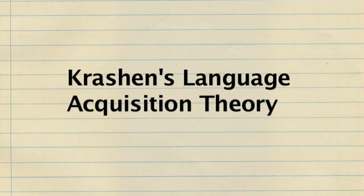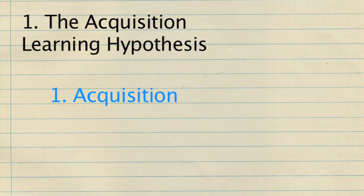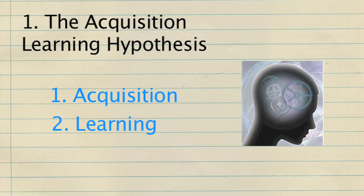The Natural Approach is based on Krashen's Language Acquisition Theory. The principal tenets of this theory are the following. The Acquisition-Learning Hypothesis: there are two distinctive ways of developing competence in a second language — acquisition and learning. Acquisition is an unconscious process that involves the naturalistic development of language proficiency through understanding and using language for meaningful communication.